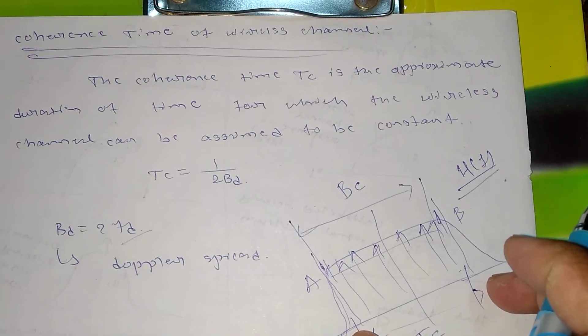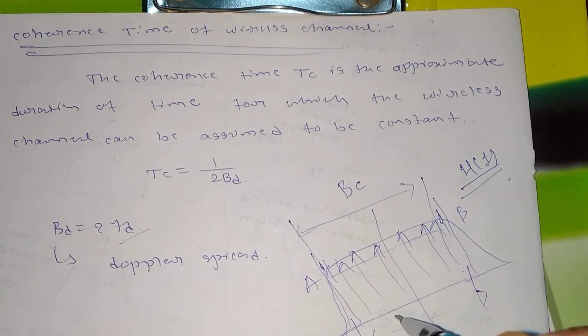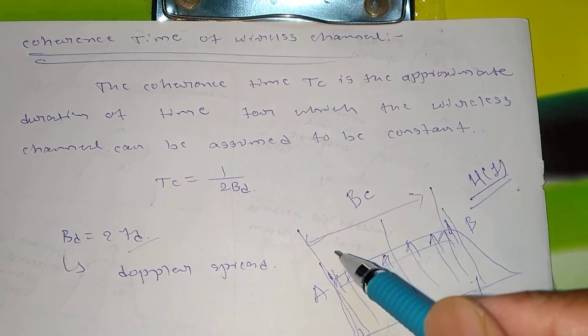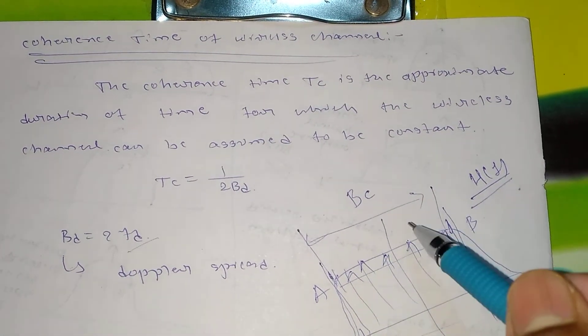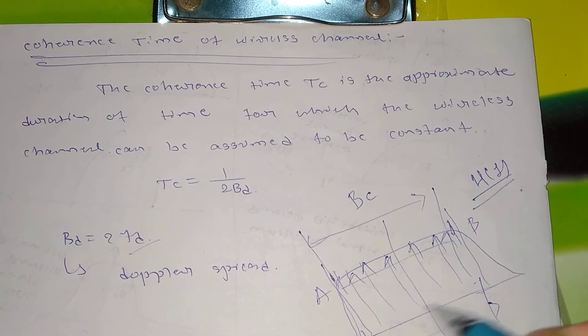And the time corresponding to that response for which it is constant is called as coherence time. Or else in other way I can say the bandwidth for which the response is flat, and that bandwidth is mapped onto a time axis.